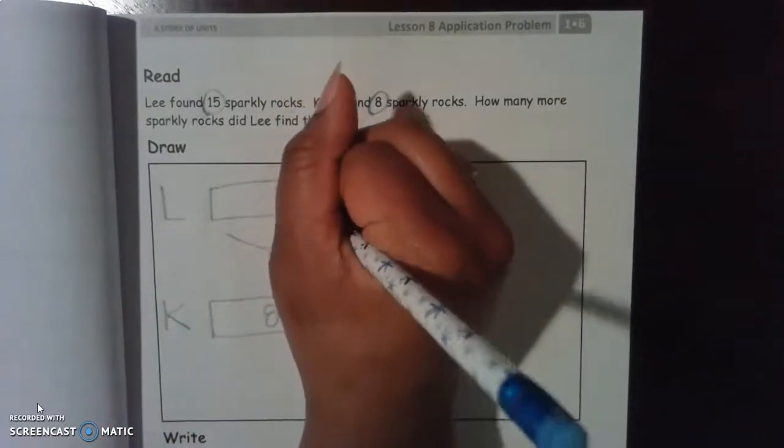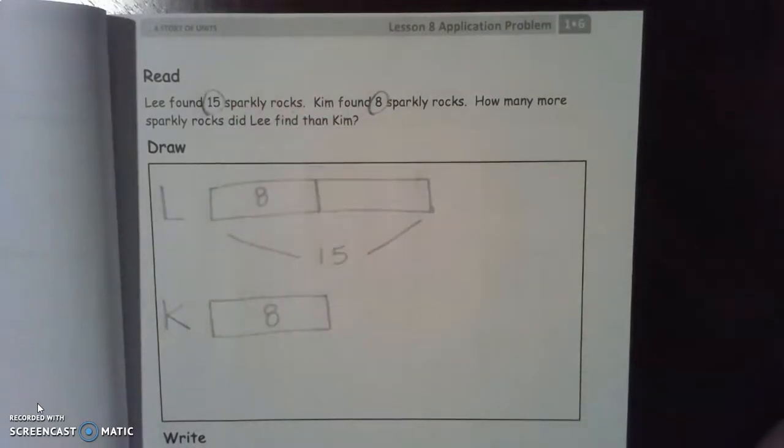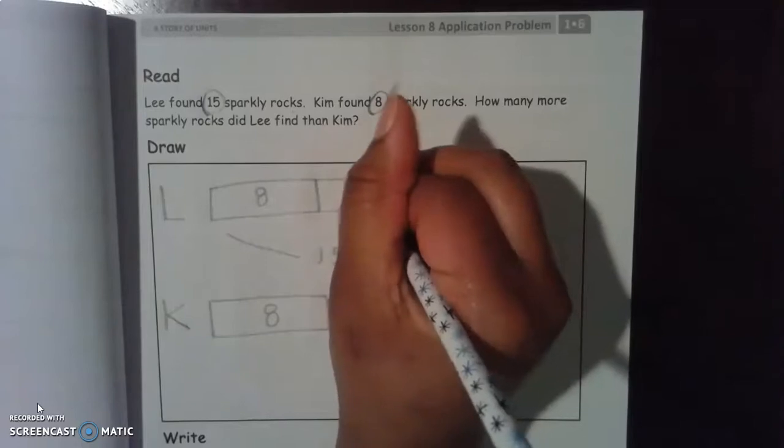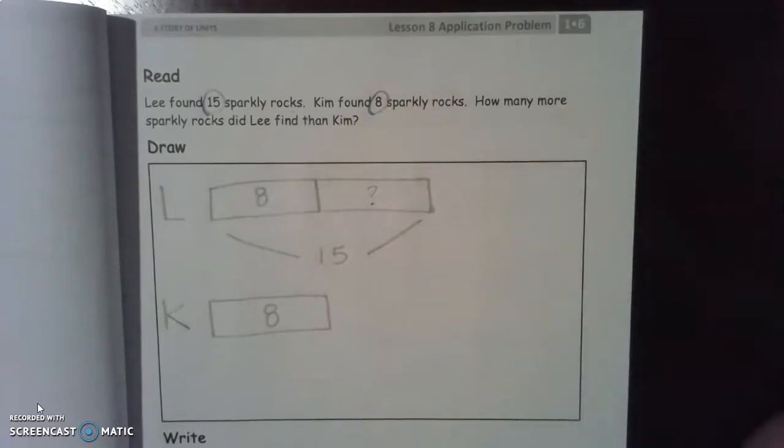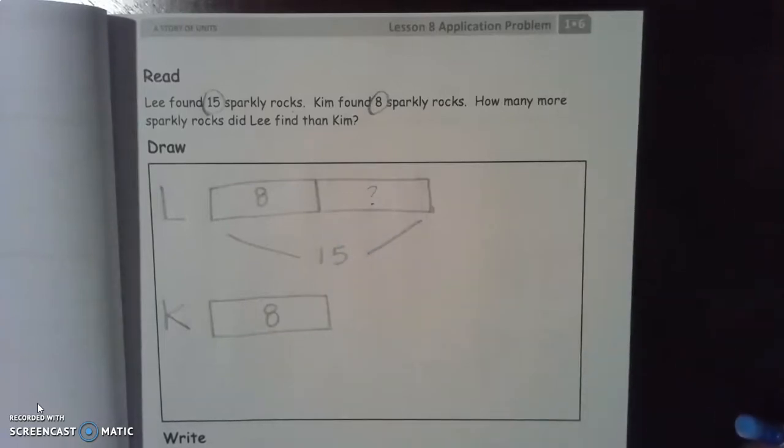So if we're trying to figure out how many more rocks Lee found than Kim, we know that 8 has to be a part of Lee's tape diagram. So we're now looking for the part that we don't know. How can we figure out our unknown part or our mystery number?